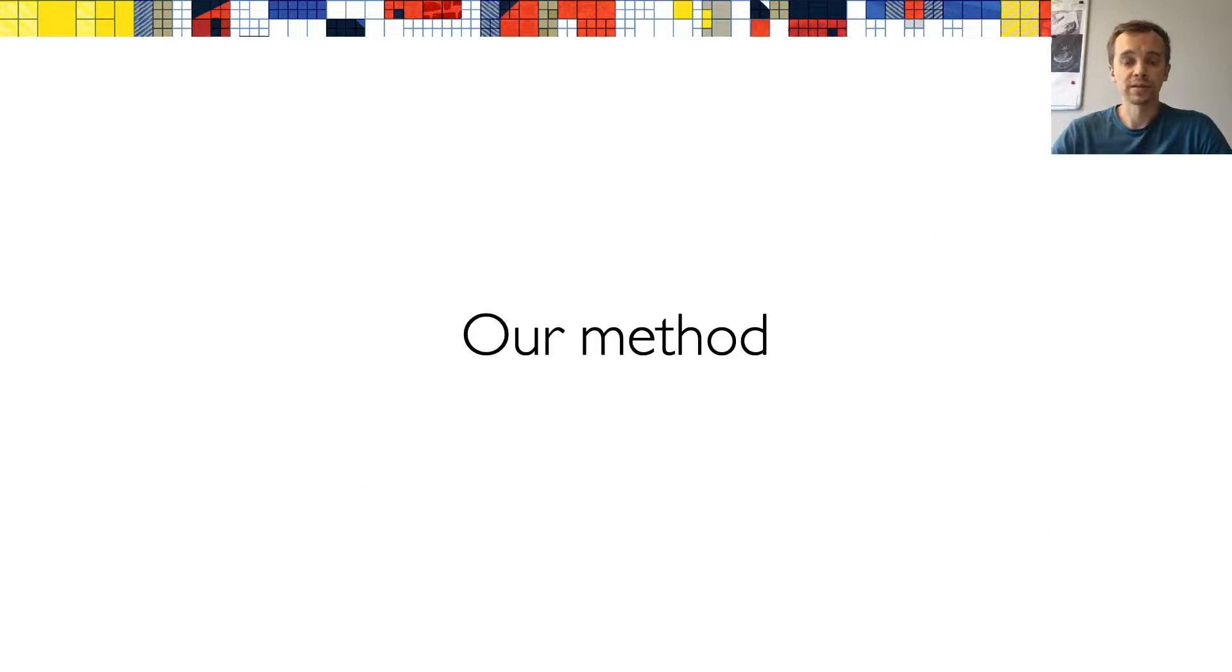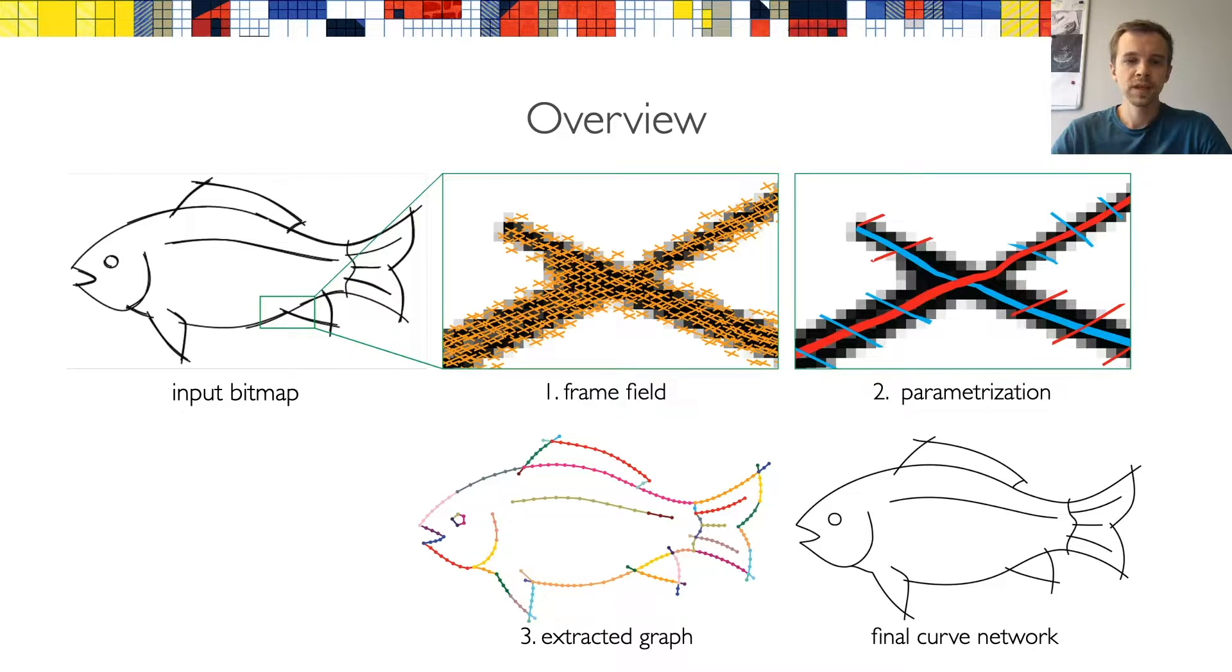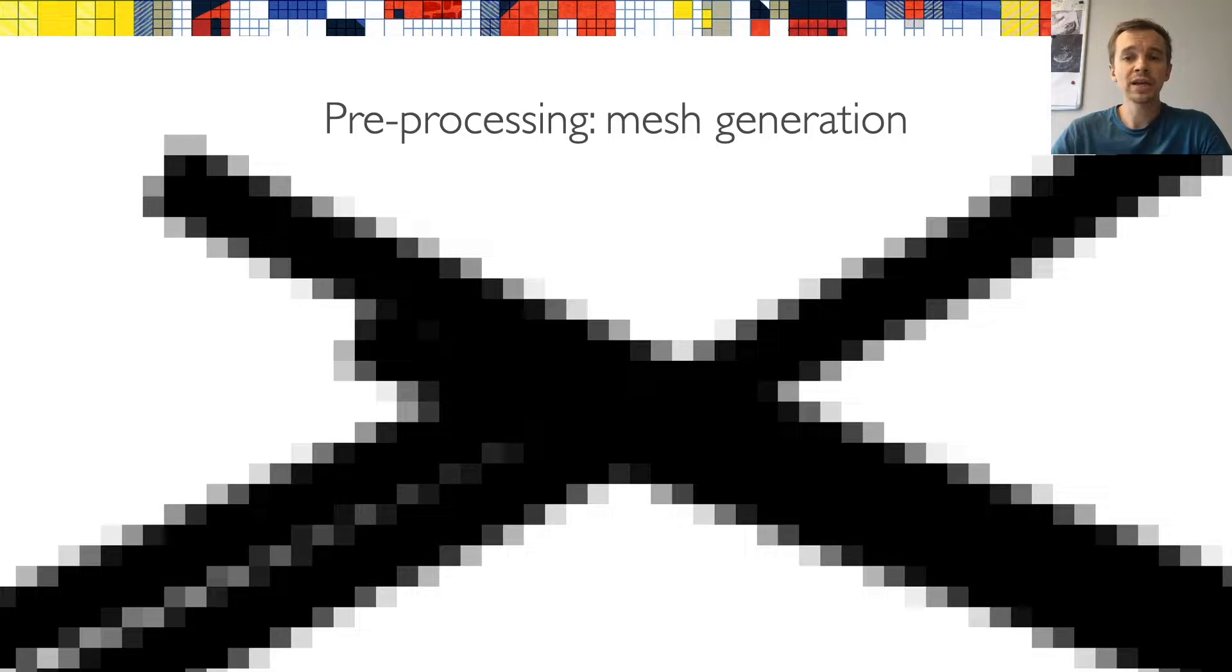Let's now have a look at our method. Our method adopts a three-step pipeline that is common in parameterization-based quad meshing. Starting from the input drawing, we first compute an orientation field that is locally aligned with the tangent direction in the sketch. We then use this field to compute a field-aligned parameterization, whose iso lines closely follow the input strokes. In the last step, we define the topology of the drawing by mapping the iso lines back to the sketch space. But of course, before we can do any of this, we first have to discretize the input domain.